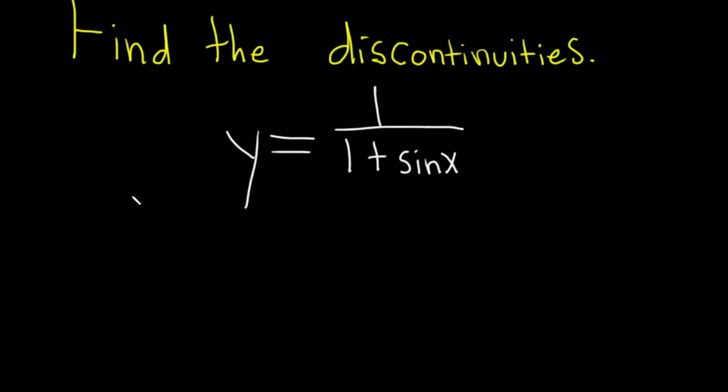Solution. This function will be discontinuous whenever it has division by zero because there's really no issues with the one up top. The only possible problem is if you have a situation like this which is no good.